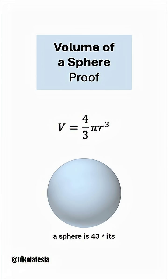We know that the volume of a sphere is 4 over 3 pi times its radius cubed. But where does this come from? Let's prove it.